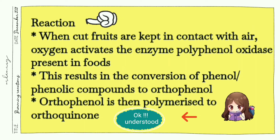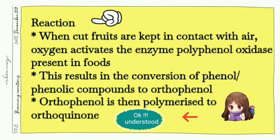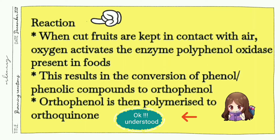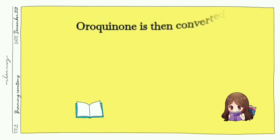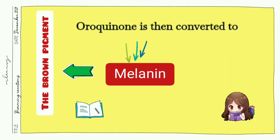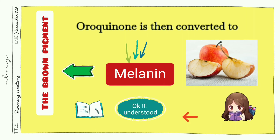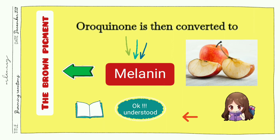This results in the conversion of phenolic substances present in the food product to a substance called ortho-phenol. This ortho-phenol is then polymerized to form ortho-quinone. Ortho-quinone is finally converted to melanin — that is the brown pigment — resulting in the formation of brown color in cut fruits when kept in contact with oxygen.